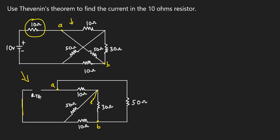For the delta-to-star conversion, we need one resistor for each node. I'll label the nodes A, B, and C. To find Ra, the formula is the product of the two adjacent resistors in the delta — which are 50 ohms and 30 ohms — divided by the sum of all resistances in the delta connection.